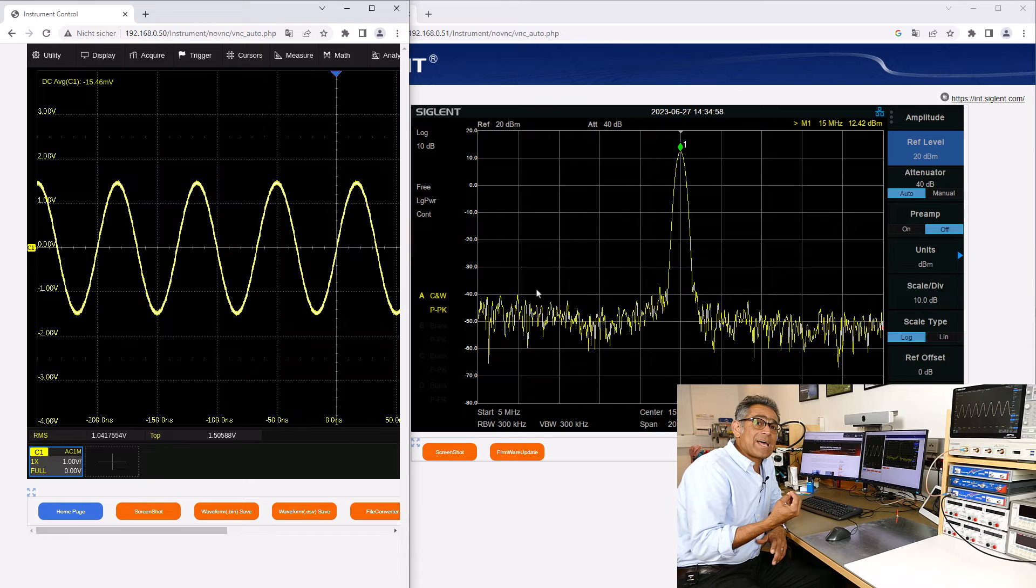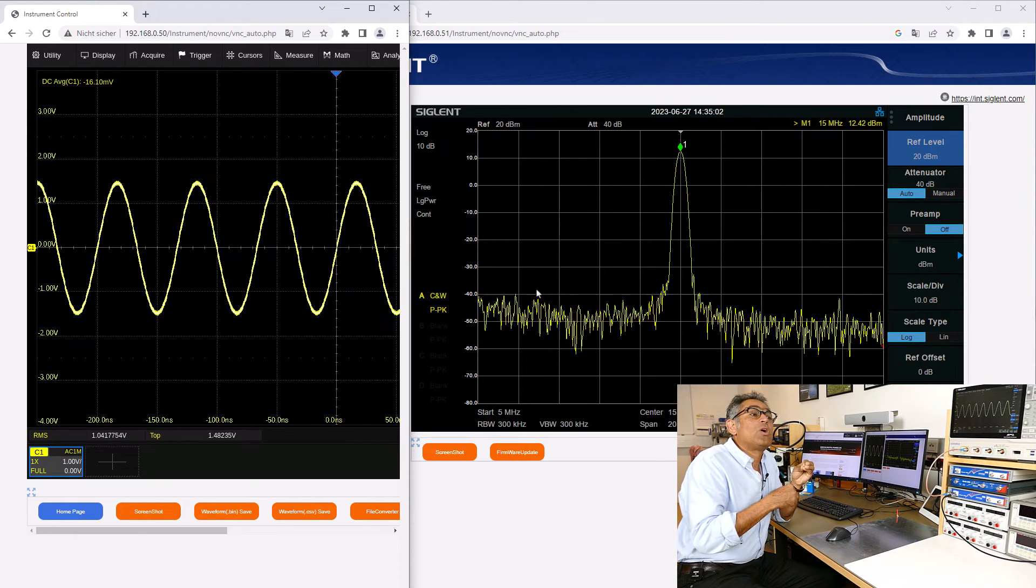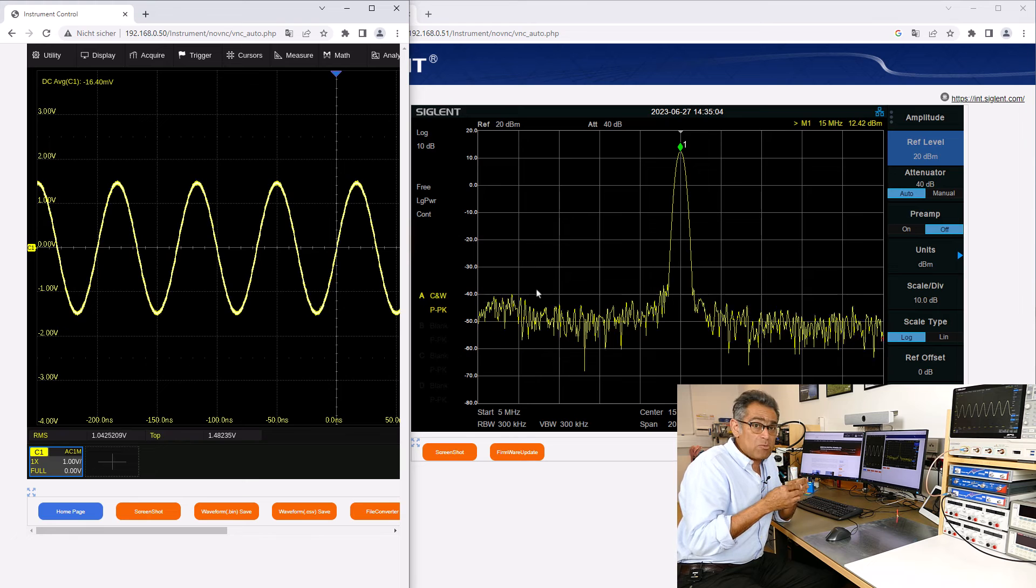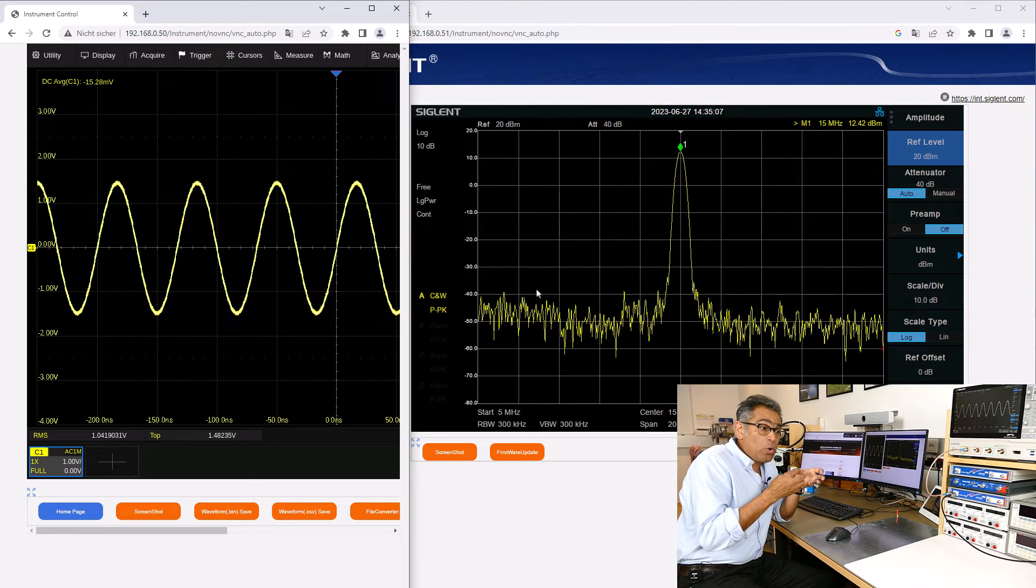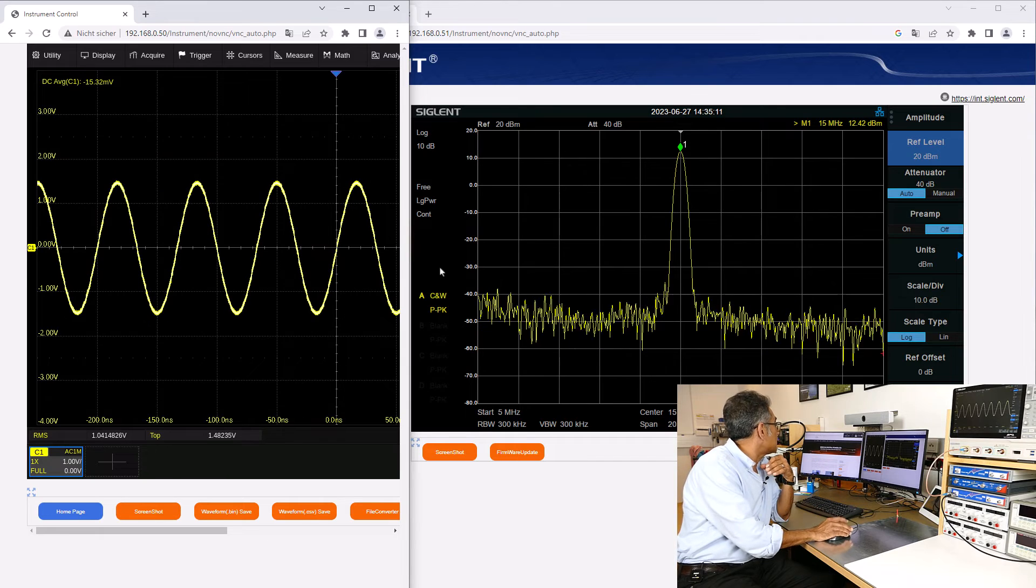So earlier on we gave a numerical example, and we said that the 13 dBm's converted into 20 mW, and 20 mW, the voltage that you'd have to have across a 50 ohm resistor was exactly 1 V,